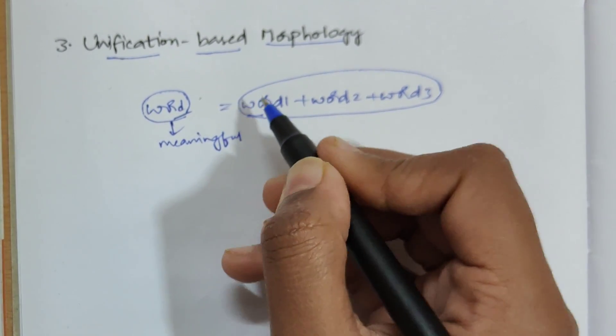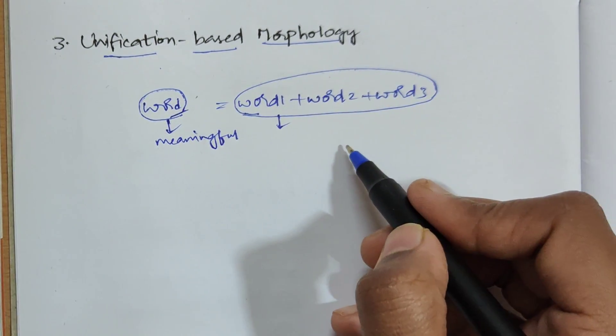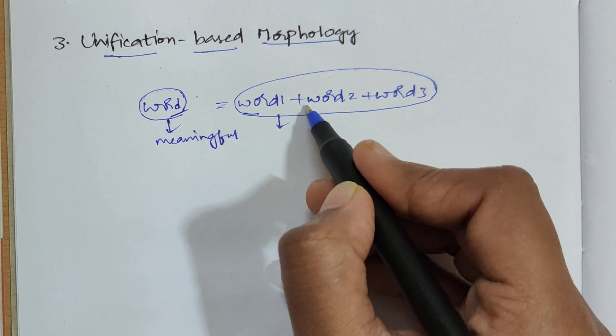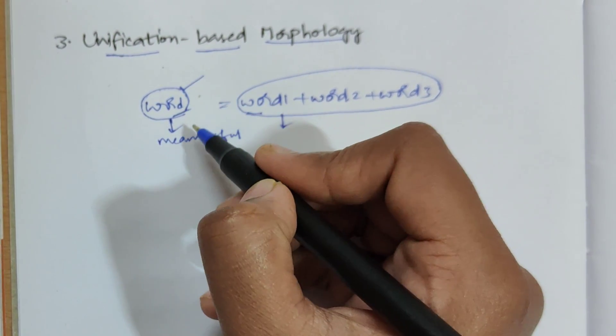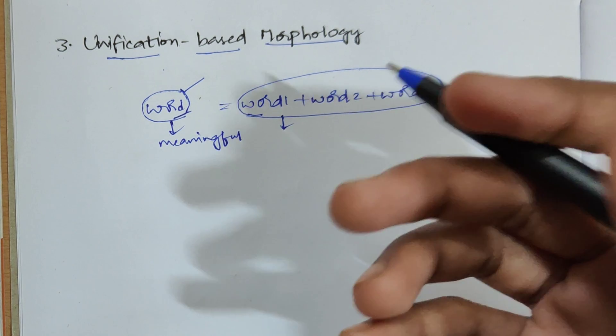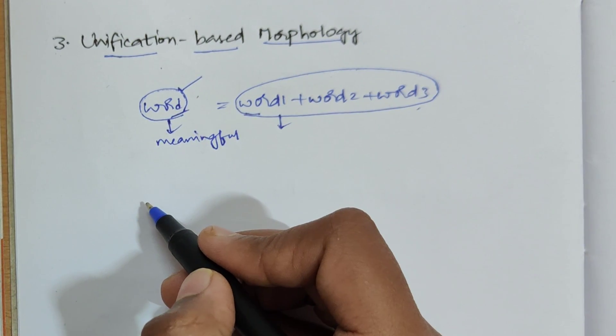So the main thing of this unification-based morphology is you have to analyze how particular words are combined to form a meaningful word by using different rules. So that's it.